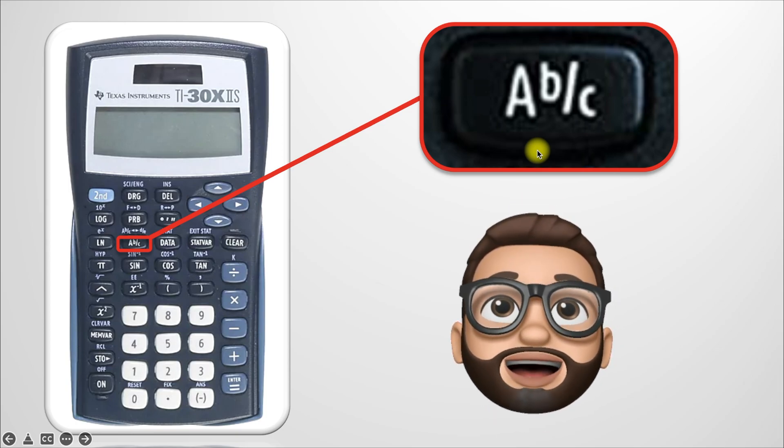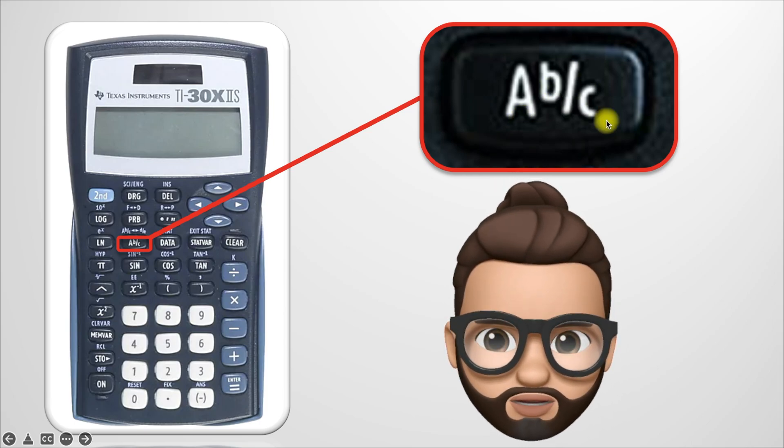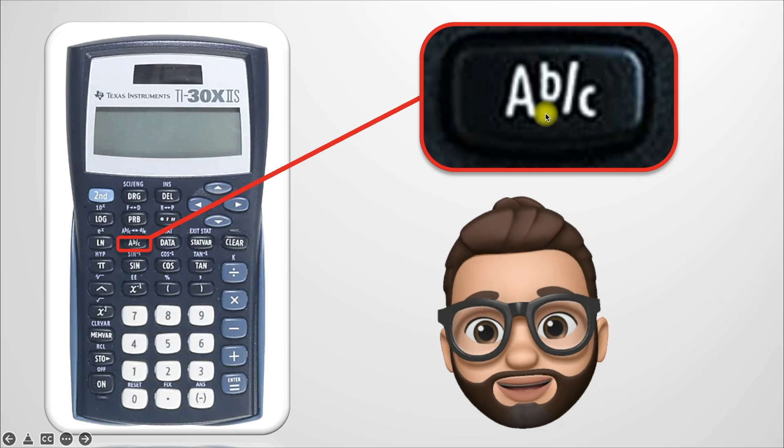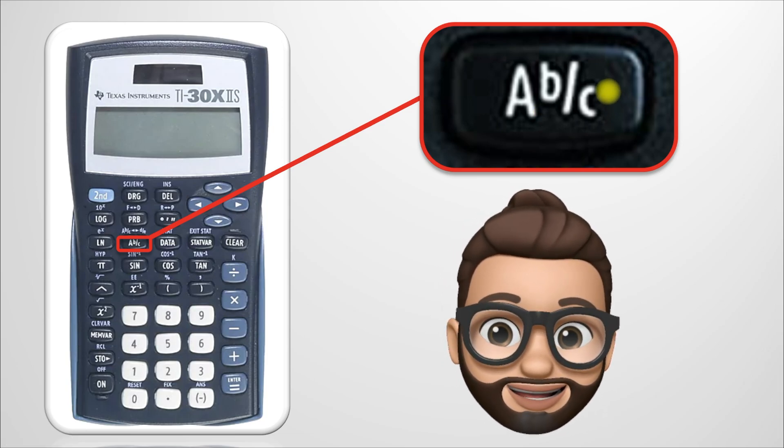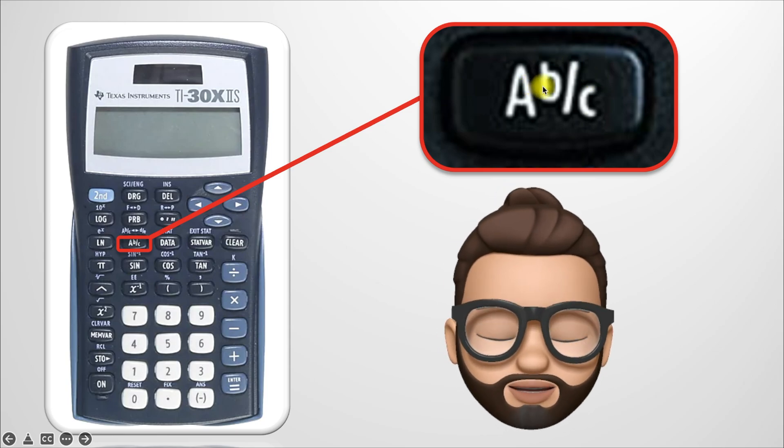This here is the ABC button. It's the most important button that you'll need to know whenever you're making fractions because even though it has a mixed number on it, right next to that mixed number is the fraction part so we use this button to make fractions as well.